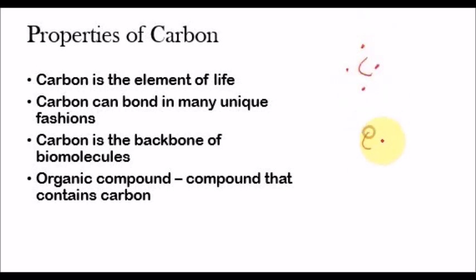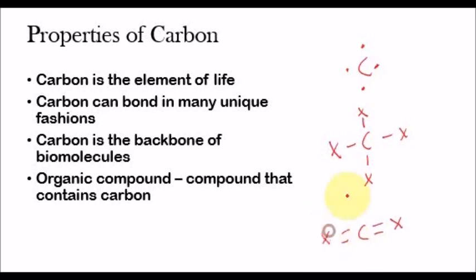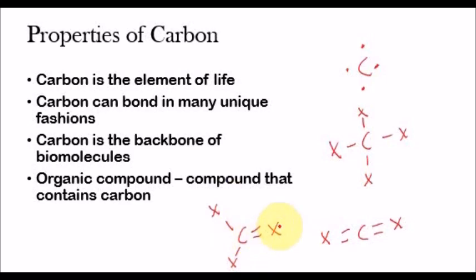Carbon can single bond — let's say carbon is single bonding to four different elements, like element X. Carbon can also double bond. Or, carbon can single bond and double bond at the same time. These are the three ways carbon can bond around all the other elements it surrounds itself with. Carbon can also double bond between two elements, and carbon can also have one double bond and then two single bonds. So, carbon is very unique in the way that it can bond in many different ways: all single bonds, all double bonds, or one double bond and two single bonds.